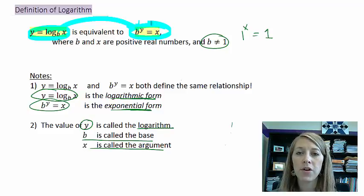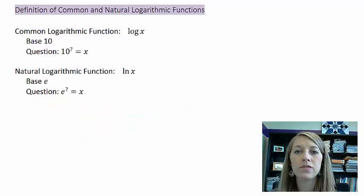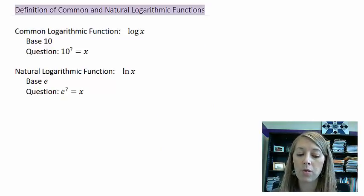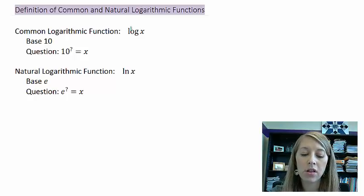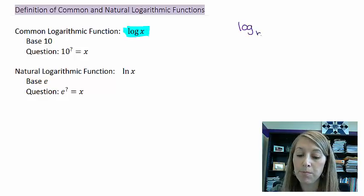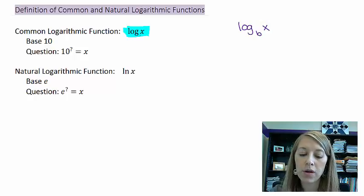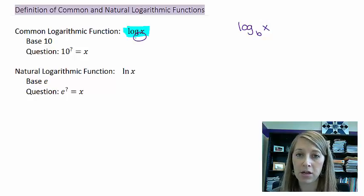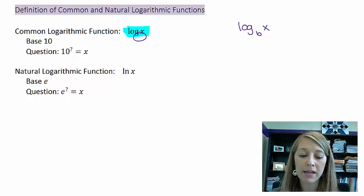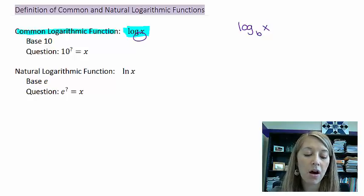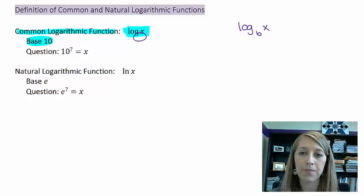Now we want to talk about some very specialized logs. We actually have two specialized logs. The first one is called the common logarithmic function, and that is just log of x. So far, all the ones we've seen have log base b of x. Notice there's no base here. If it leaves off the base, then we assume this is a common logarithmic function and that our base is equal to 10.